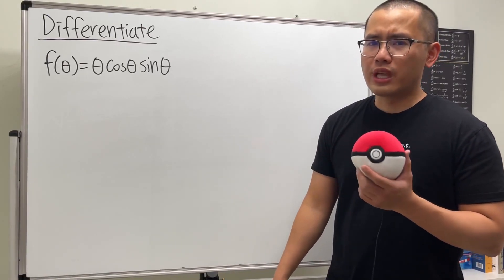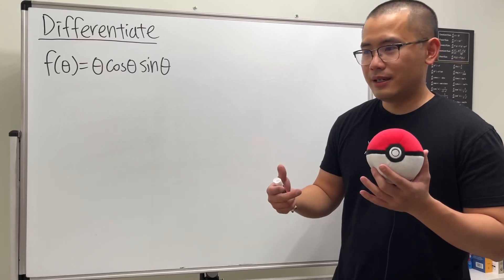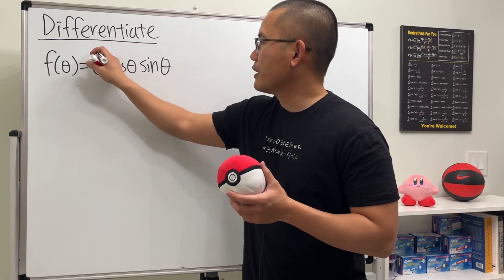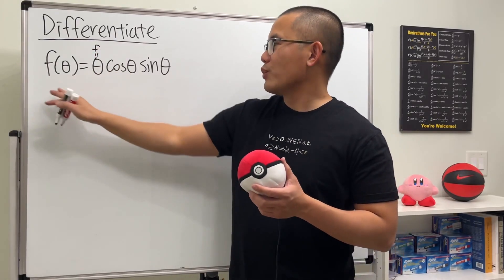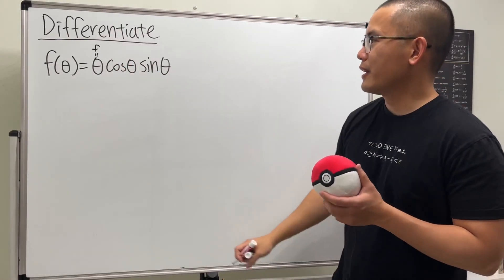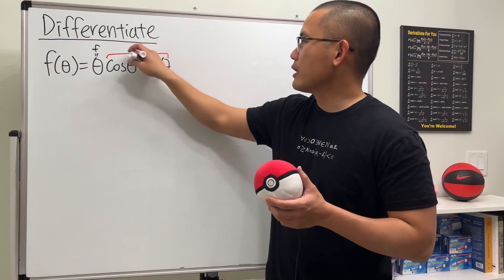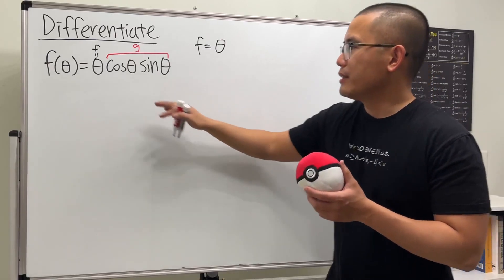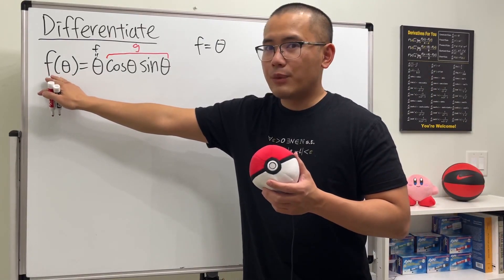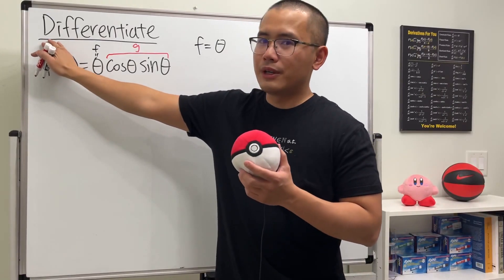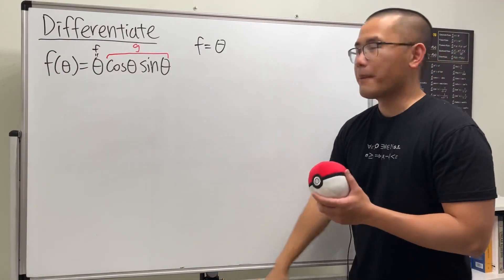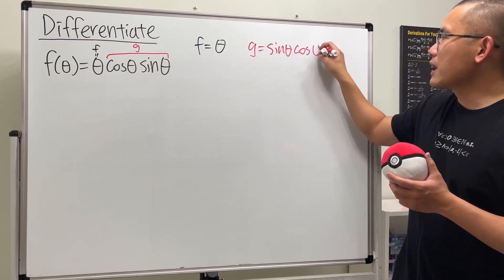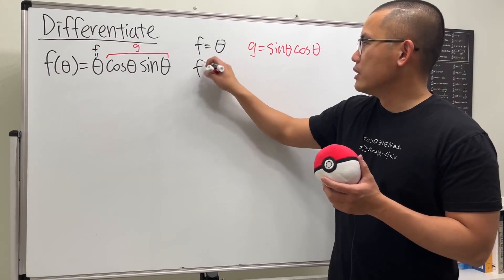Since we haven't generalized the product rule for three terms, let's do the following. I'm going to call the first function f and the second g. So f is just equal to theta — ignore the notation for now — and g equals sine theta times cosine theta.